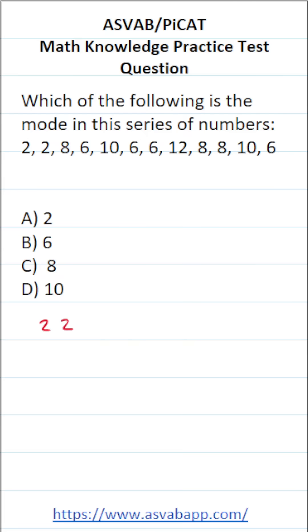We have 2, 2. Let's cross those out. What comes after 2? We have 6. We have 1, 2, 3, 4, 6. So that's going to be 6, 6, 6, 6. Cross them out to make sure we got all of them.